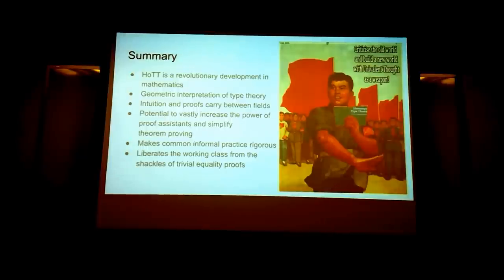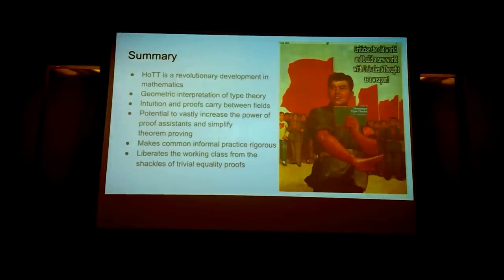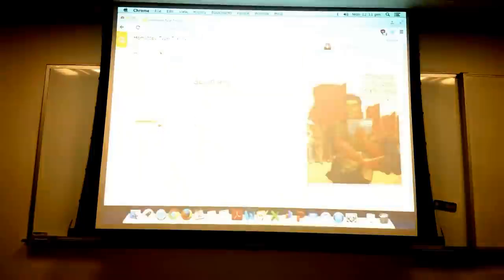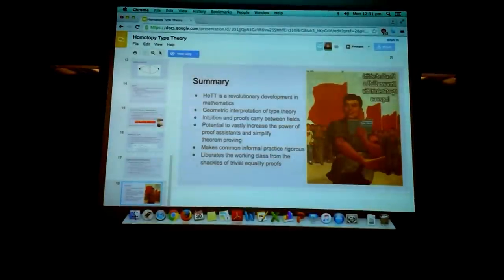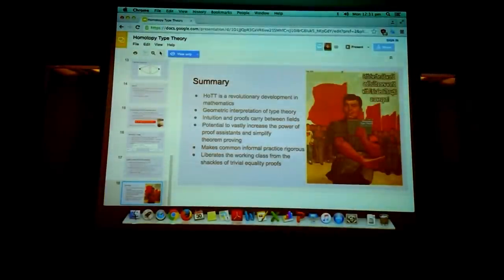So it's a geometric interpretation of type theory and it is rather revolutionary — it's only happened in the last few years. It has the potential to vastly increase the power of proof assistants and simplify theory and proving. It makes common informal practice rigorous. Any questions?